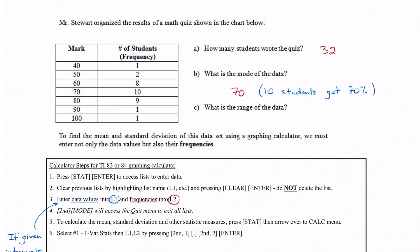Part C asks for the range. We take the largest value minus the smallest: 100 minus 40 equals 60, so the range is 60%. The mode was 70%.